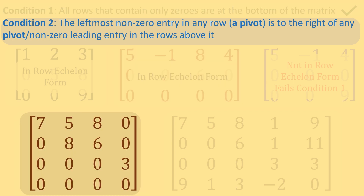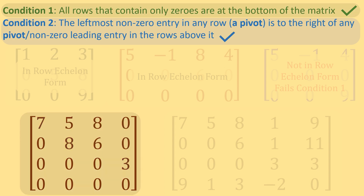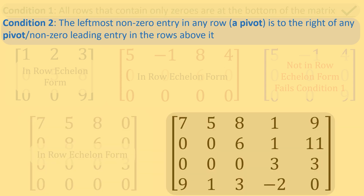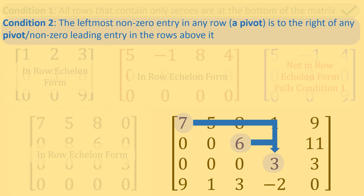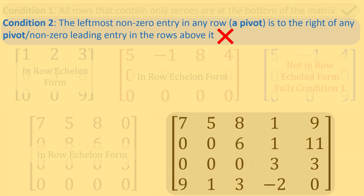In the bottom left matrix, the eight is to the right of seven, and the three is to the right of seven and eight above it — this matrix is in row echelon form. In the bottom right matrix, the six is to the right of seven, and the three is to the right of six and seven, but the nine in the bottom row is not to the right of any of the leading entries from the rows above it. This matrix fails the second condition and is not in row echelon form.